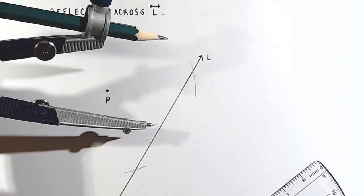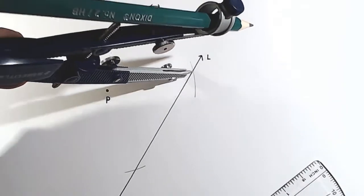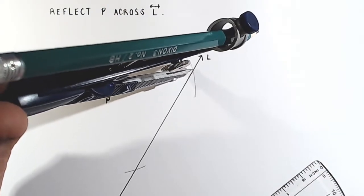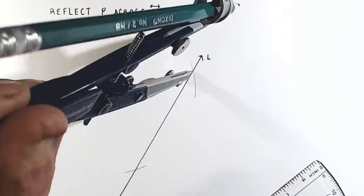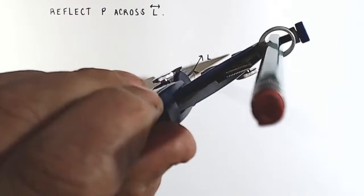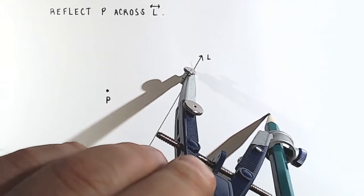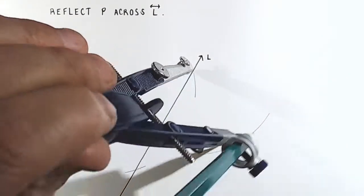Now, pick up your compass and place your compass point on one of those places where your arc crosses the line and draw another arc. This time make it bigger like that.